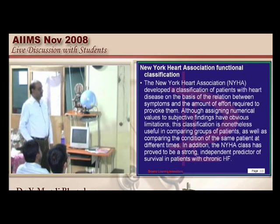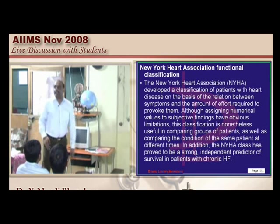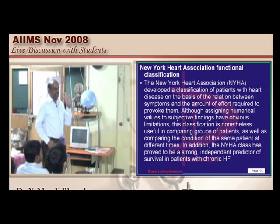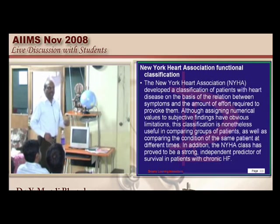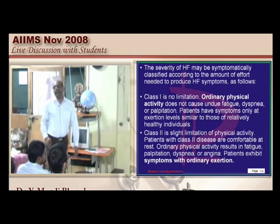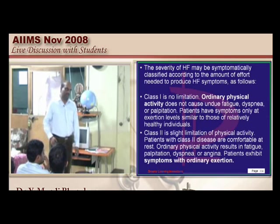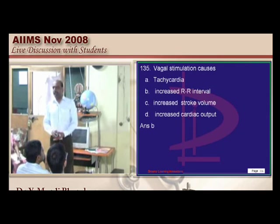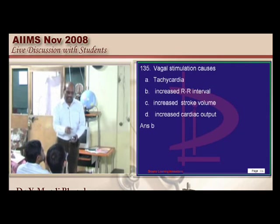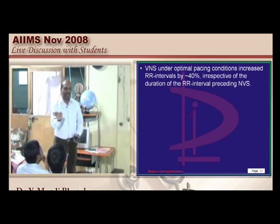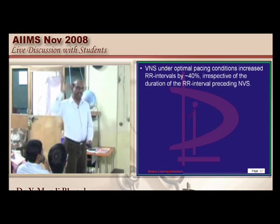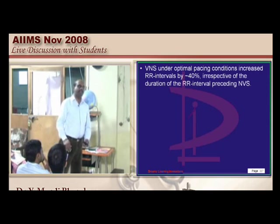The New York Heart Association classification — class 4 is dyspnea even at rest. With vagal stimulation, there is parasympathetic stimulation of the AV node which decreases conduction through it. The AV node determines the RR interval, so the RR interval on ECG becomes prolonged with any vagal parasympathetic stimulation.